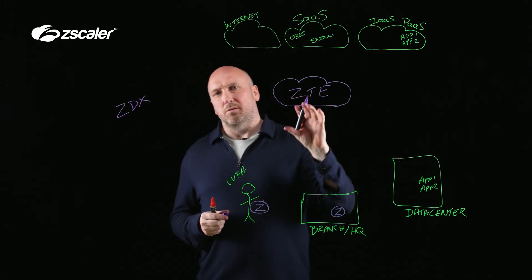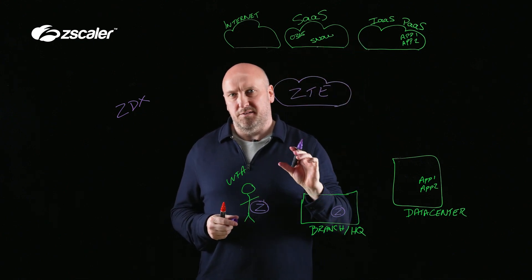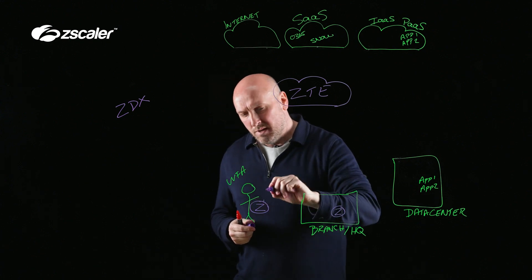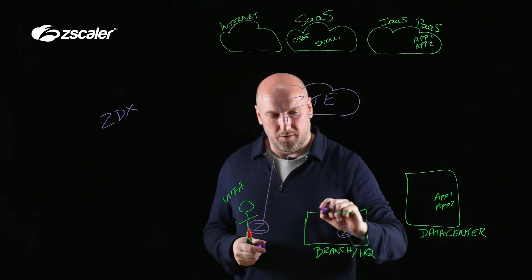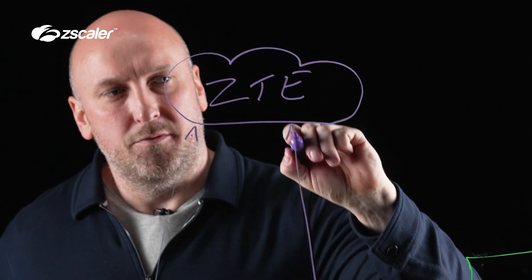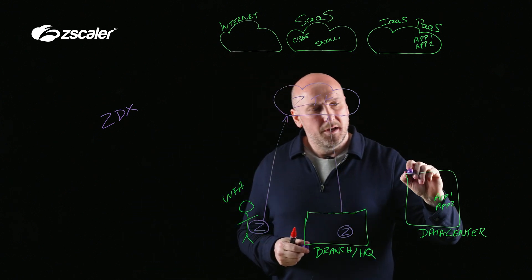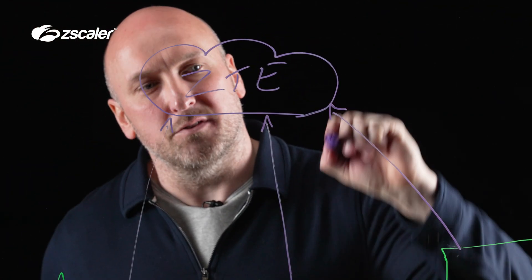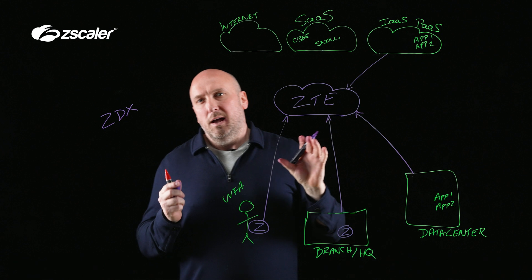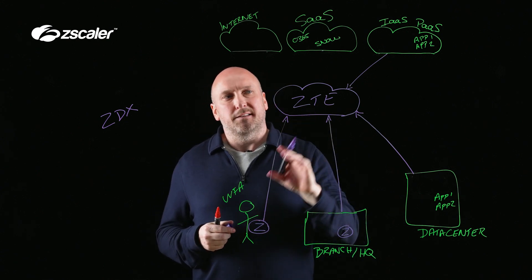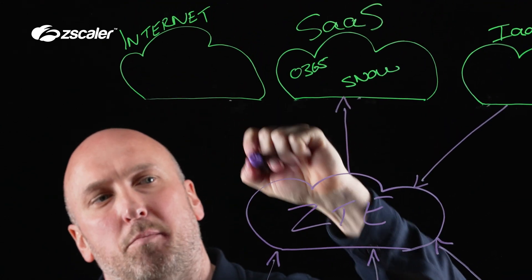Essentially, the Zero Trust Exchange is what's going to sit between your users — who are now everywhere and anywhere — and connect them securely to the services they need through a direct-to-cloud approach. We'll have traffic going to the Zero Trust Exchange from users working from anywhere, from your branches, your headquarters, and from servers or workloads connecting outbound. We leverage identity and policy to ultimately forward traffic appropriately to the relevant services dictated by that policy.